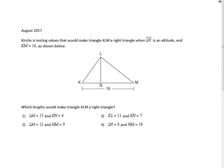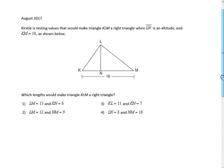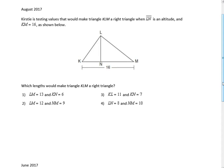Got one more to look at — this was from August 2017. Kirstie is testing values that would make triangle KLM a right triangle when LN is the altitude. So LN is our altitude, it's perpendicular, and this is a hills and sass question. We know the hypotenuse is 16, so I like to label it: hypotenuse, leg 1, leg 2, side 1, side 2, altitude.